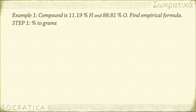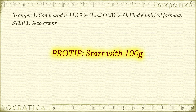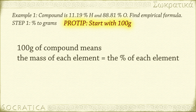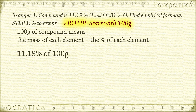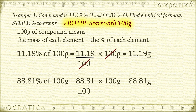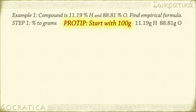Step 1: we first want to see these amounts in grams rather than percents. If the mass of the compound isn't given in the problem, we can use any amount we'd like. 100 grams is a sensible choice, because then the mass of each element is numerically equal to the percent. So 11.19% of a 100-gram sample is 11.19 grams, and 88.81% is 88.81 grams. We have 11.19 grams of hydrogen and 88.81 grams of oxygen.